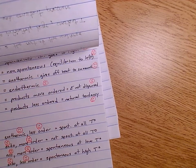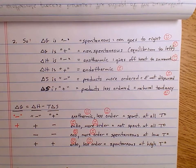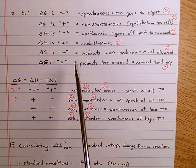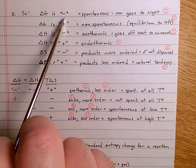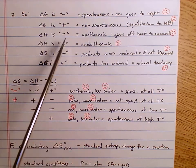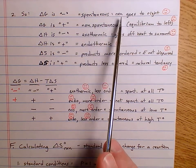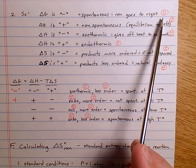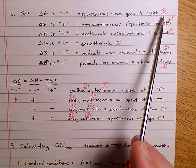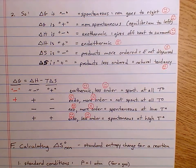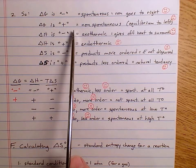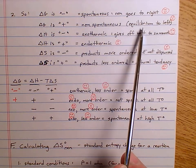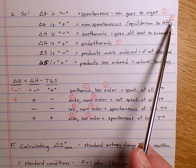Let's break it down into a little table. If delta G is negative, the change in Gibbs free energy is negative, that means our reaction is spontaneous — the reaction goes to the right. That's something we want; we tend to be happy when our reactions actually work. If delta G is positive, it means the reaction is not spontaneous — the equilibrium lies to the left, the reaction does not go. That usually makes us sad.